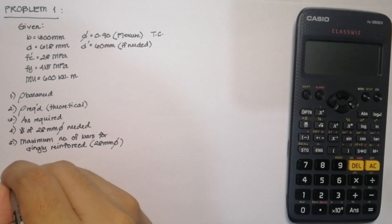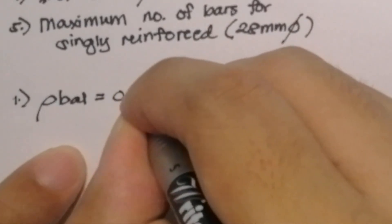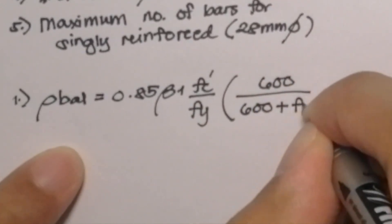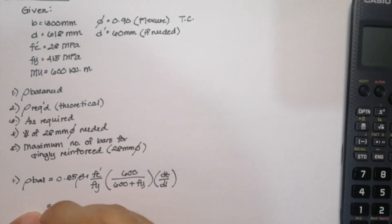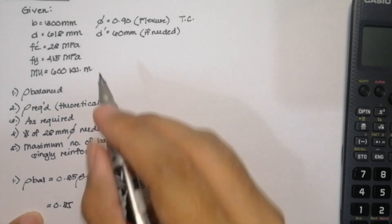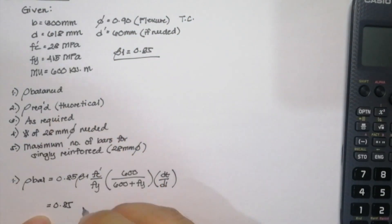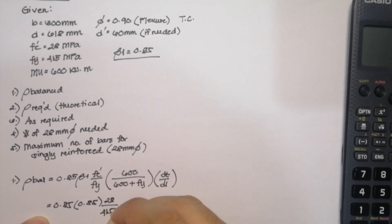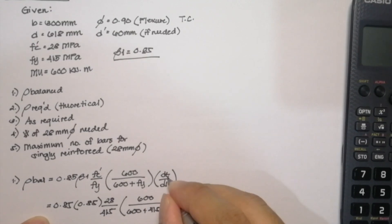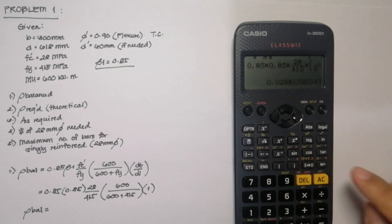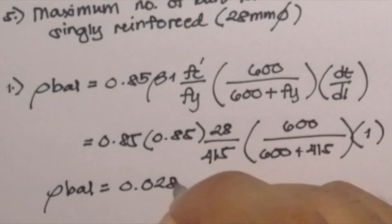Solving for the first unknown, we need to solve for ρ_balance using the formula: 0.85 × β₁ × (fc' / fy) × (600 / (600 + fy)) × (dt / d). Since our compressive strength of concrete is 28 MPa, β₁ is 0.85. Inputting values: 0.85 × 0.85 × (28 / 415) × (600 / (600 + 415)) × 1, since we have only a single layer of reinforcement. Solving for ρ_balance gives a value of 0.0288.